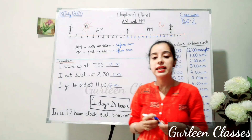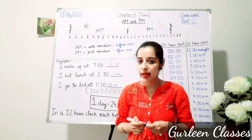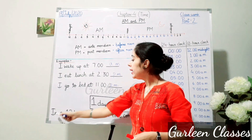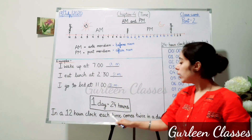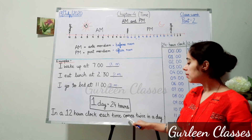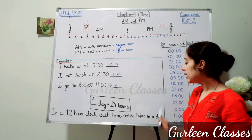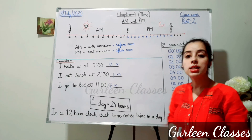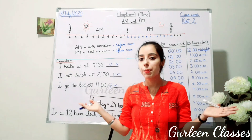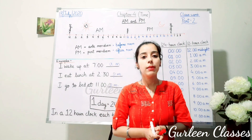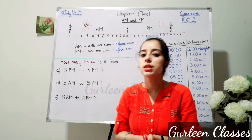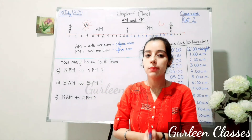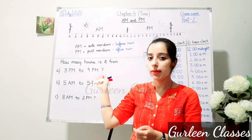Students, keep this in mind: in a 12-hour clock, each time comes twice in a day. I hope the topic of AM and PM is clear. Now let us do the next question using a timeline.